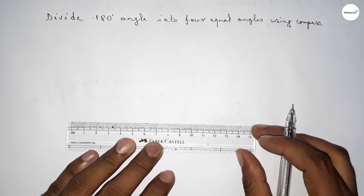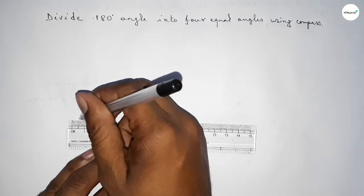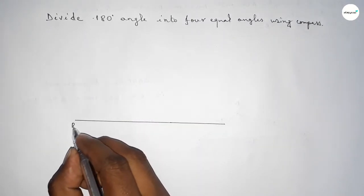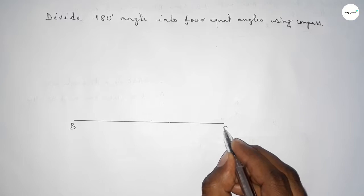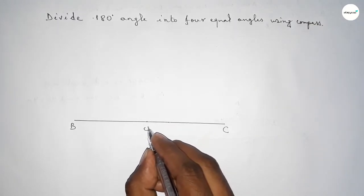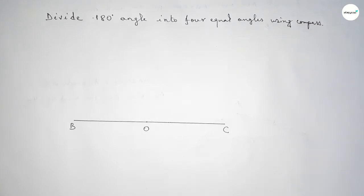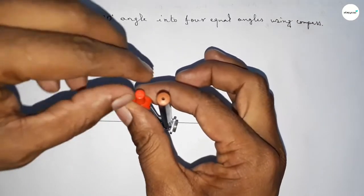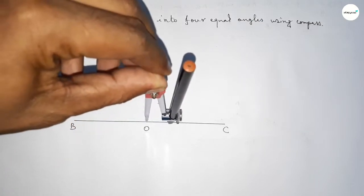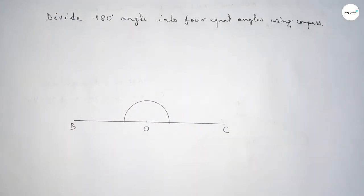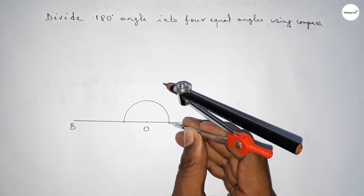First of all, we have to draw a line of any length, taking point B here and point C here, and taking a point O. Now drawing a 180 degree angle on point O — putting the compass, taking any length, and drawing a semicircle. So this is the 180 degree angle.